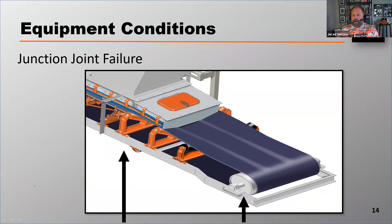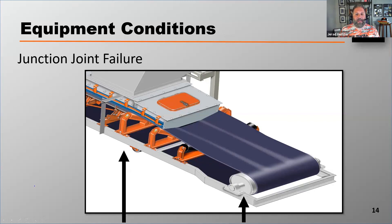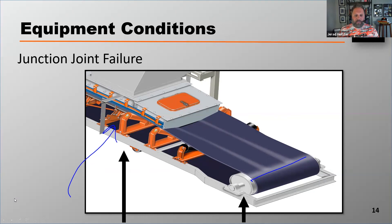Junction joint failure comes from the belt being forced into its trough too soon. When you take the belt off the tail pulley, the tail pulley is flat, and then you form that belt into its trough, putting a lot of stress on the belt. That stress is okay if there's enough real estate for it to happen. But a lot of designs force that belt into its trough without enough real estate. When that belt is taken from a flat tail pulley to a fully troughed idler in too short a distance, that'll cause junction joint failure.